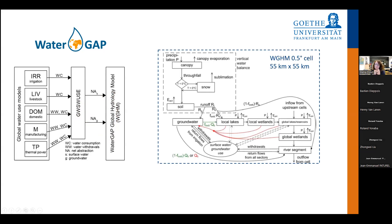We compute net abstractions from surface water bodies and groundwater — abstraction minus return flow — which feeds into the Water GAP global hydrologic model. That model has many water storage compartments with inflows and outflows, like ordinary differential equations. It operates at half-degree grid cell resolution with daily temporal resolution, computing a vertical water balance, and routing runoff into groundwater, lakes, wetlands, and rivers — all affected by net abstractions from surface water or groundwater use.